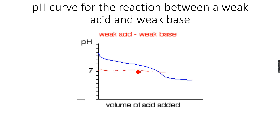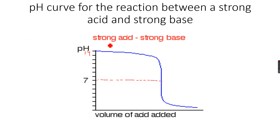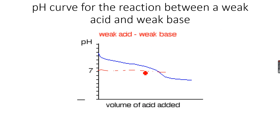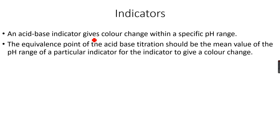You can see there is no vertical portion. Since both are weak, neither can dominate over the other, so just like the strong acid and strong base case, the equivalence point will be close to seven. Neither can dominate over the other, so we will have an equivalence point close to seven. That's it for the pH curves — now let's look at indicators.